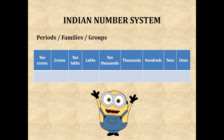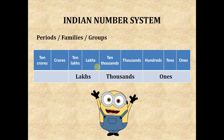Now see the place value chart: 1s, 10s, 100s, 1000s, 10,000, lakhs, 10 lakhs, crores, and 10 crores. The 1s, 10s, and 100s are divided into the ones period. 1000s and 10,000s are divided into the thousands period. Lakhs and 10 lakhs are divided into the lakhs period. Crores and 10 crores are divided into the crores period.